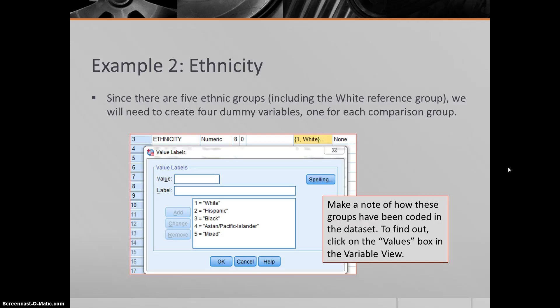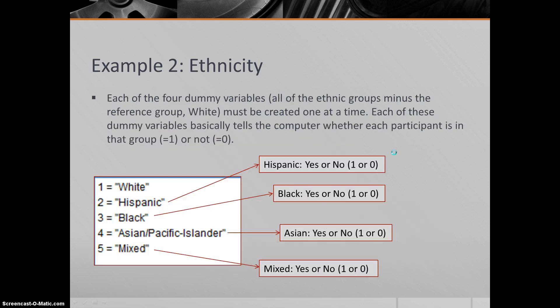One thing you're going to want to do is make a note of how these groups have been coded in the data set. To find out, you'd click on the values box when you're in the variables view to see how they have been coded. In this case, it's set up as a numeric variable versus a string variable, which would just have the words white, Hispanic, black. In this case, values have already been set: 1, 2, 3, 4, 5—each one corresponding to a particular group. So 1 equals white, 2 equals Hispanic, and so forth. You want to keep this in mind when it comes time to recoding the variables.